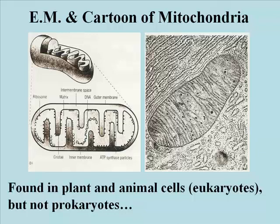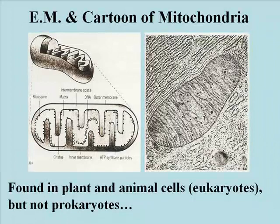Like nuclei, mitochondria are surrounded by two membranes, an inner one and an outer one. It is of course not perforated; there are no mitochondrial membrane pores. The cartoon at the left emphasizes the double membrane and the familiar elaboration of the inner membrane into cristae,